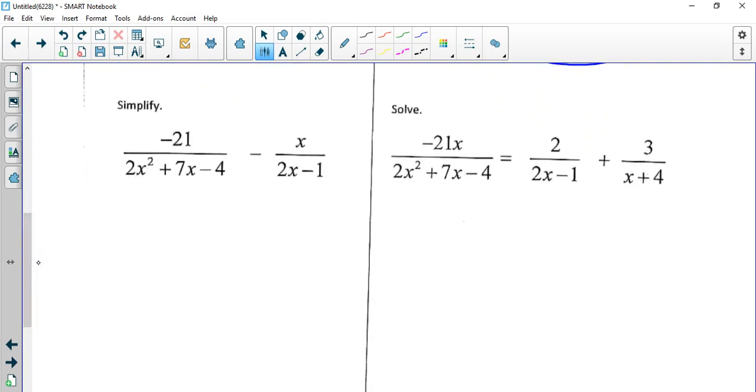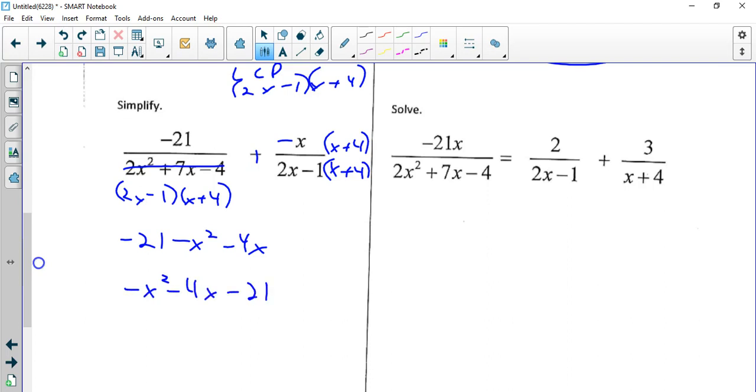Only two more. Remember we always want to factor first. So there's going to be 2x and x. And let's see, 2 times 4 is 8, minus 1 is 7. I want more positives than negatives. So my LCD here is 2x minus 1 times x plus 4. The left fraction has everything. The right one just needs the x plus 4. So I'm going to distribute negative x, so I get negative 21 minus x squared minus 4x. At this point I'm going to reorder: negative x squared minus 4x minus 21 all over 2x minus 1 times x plus 4.